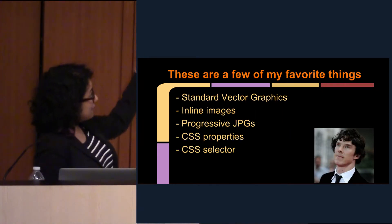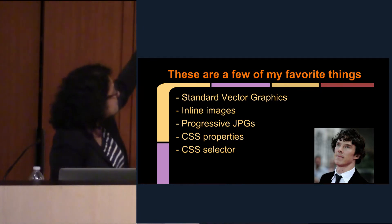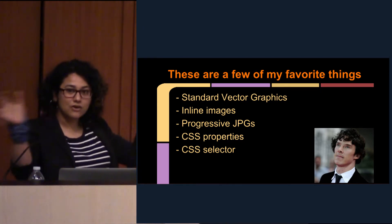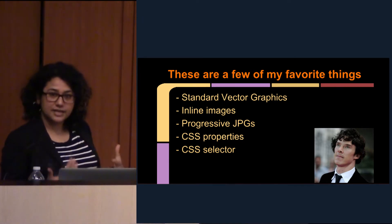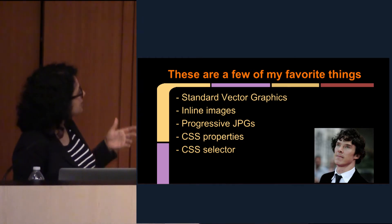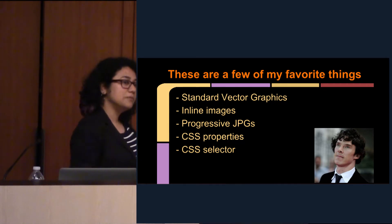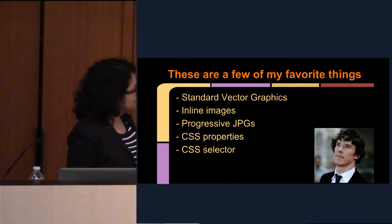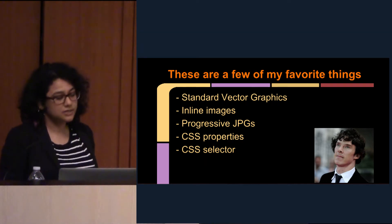So these are a few of my favorite things for performance. I'm going to focus on SVGs, inline images or data URIs, progressive JPEGs, optimizing CSS properties or when not to use CSS properties, and about CSS selectors — what can cause bloat and what won't.